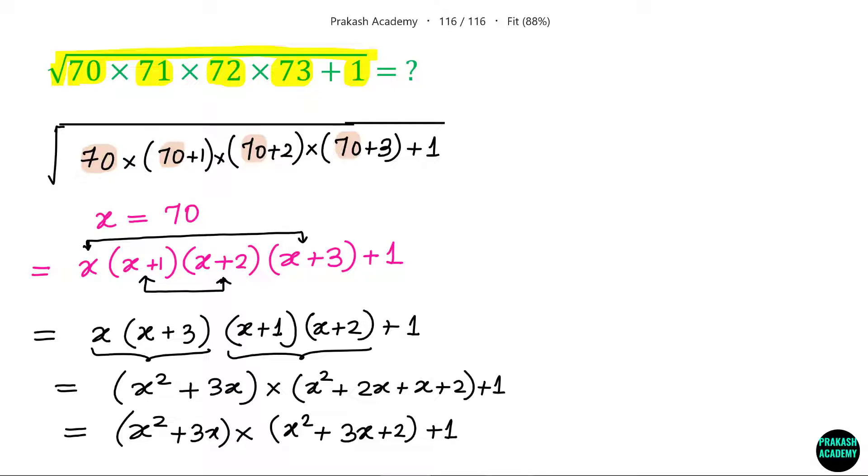Now you can observe one thing: x square plus 3x is here, as well as here. So I can make a further substitution. Let y equals x square plus 3x. With this substitution what you will have? You will have y times y plus 2 multiplied by 1. This becomes y square plus 2y plus 1.